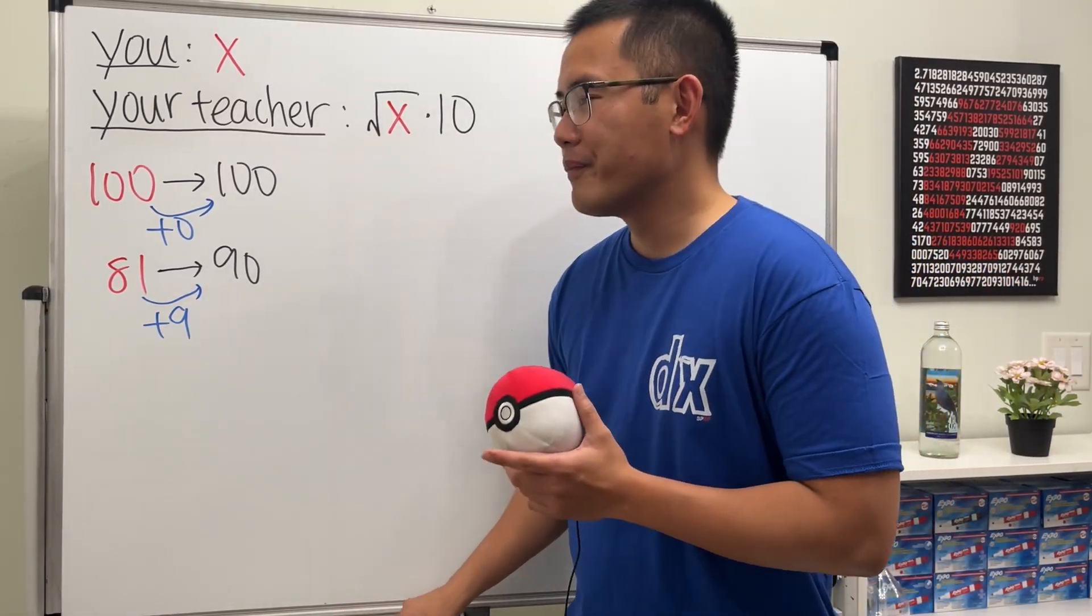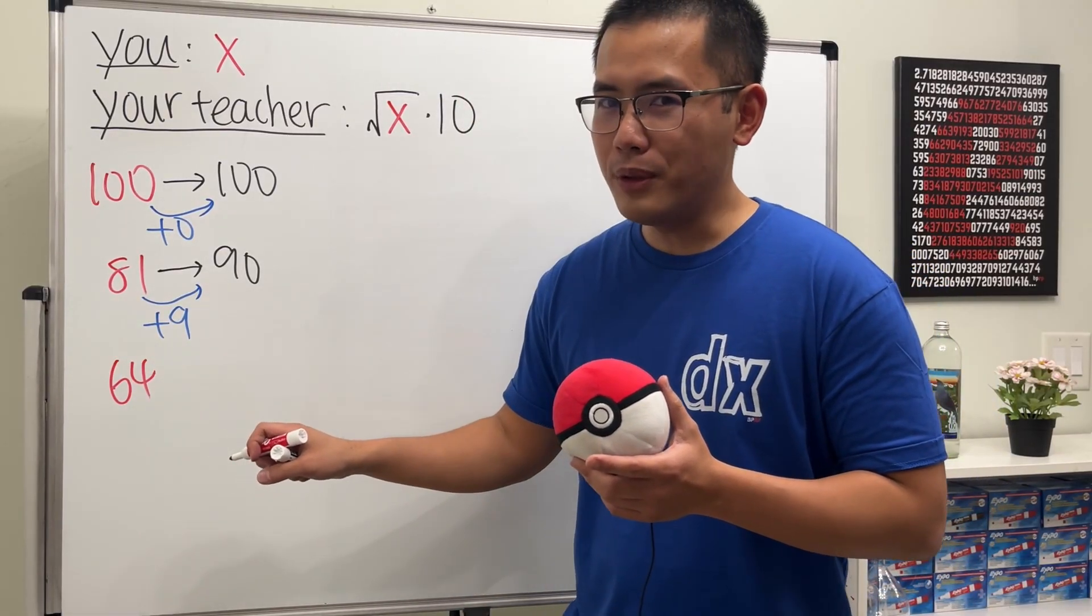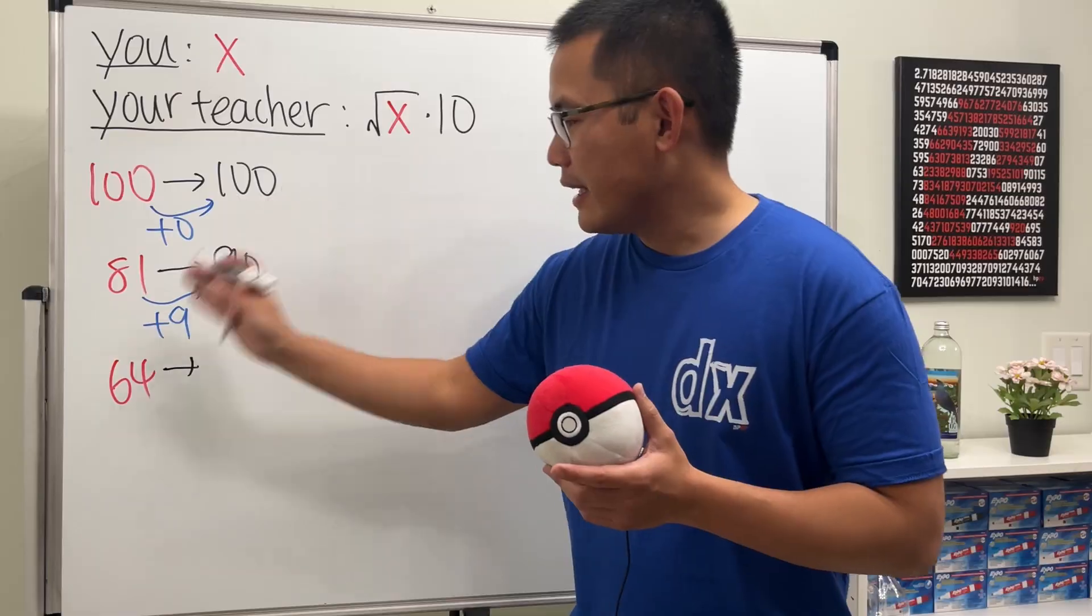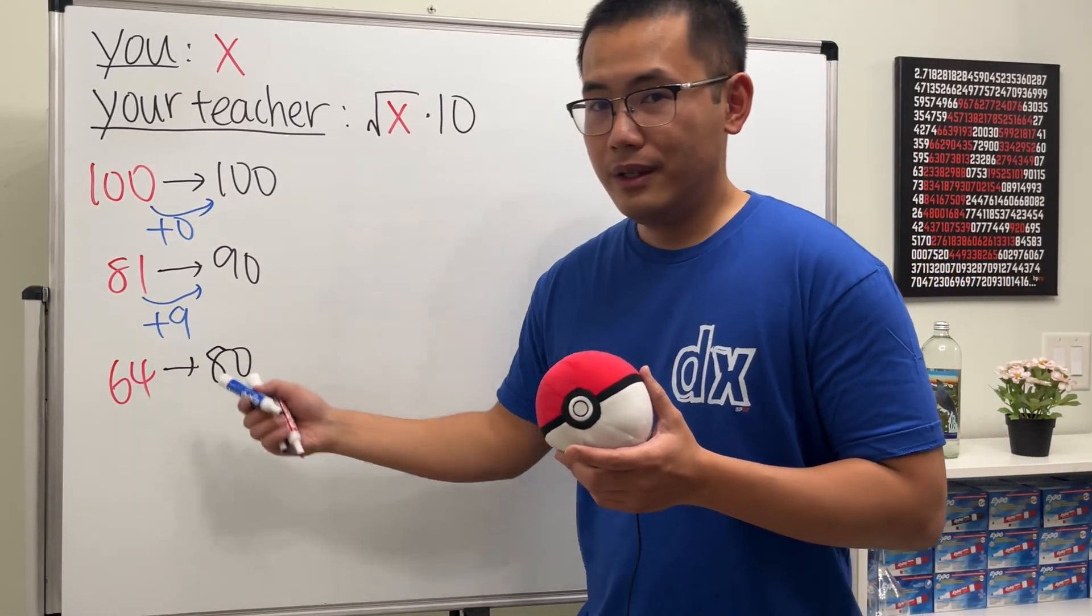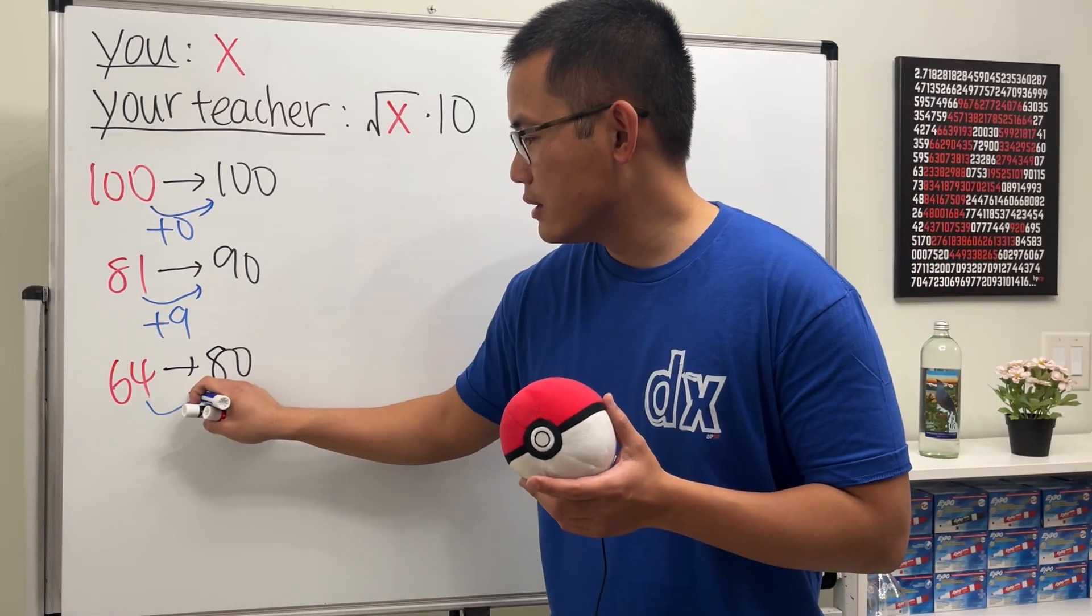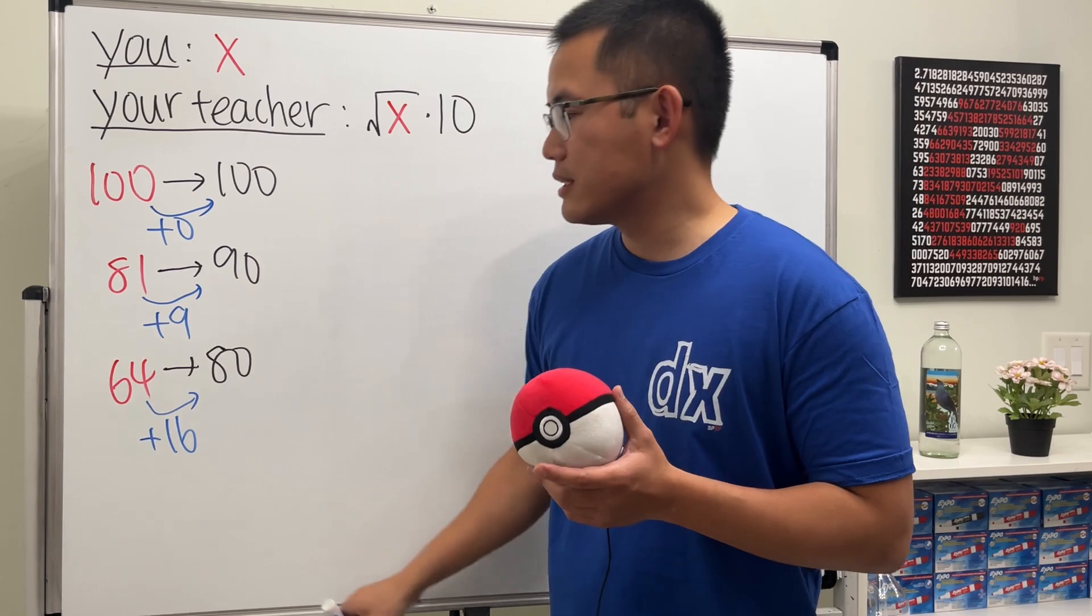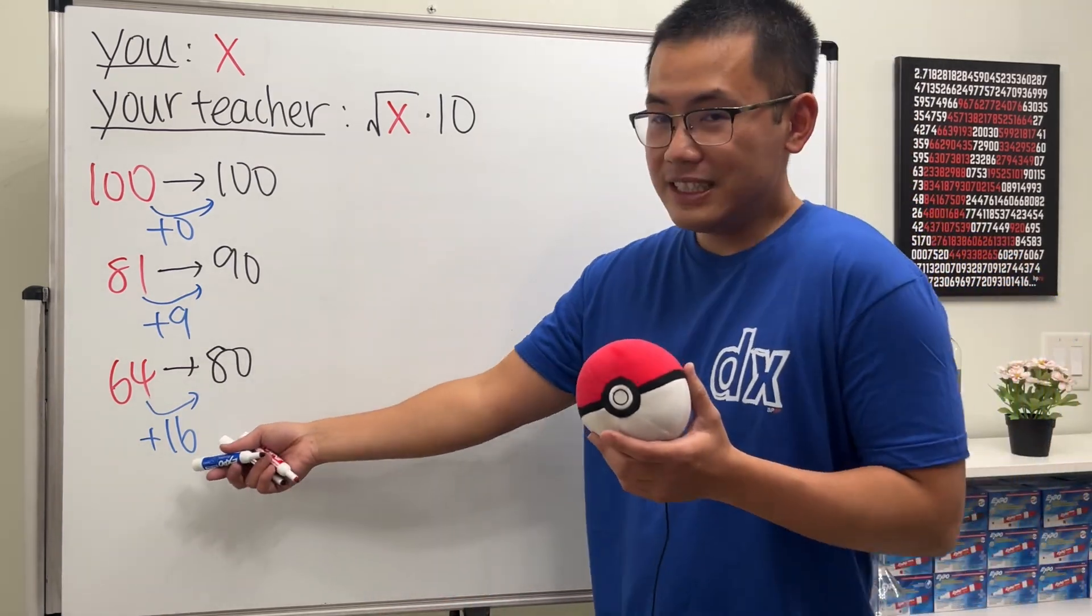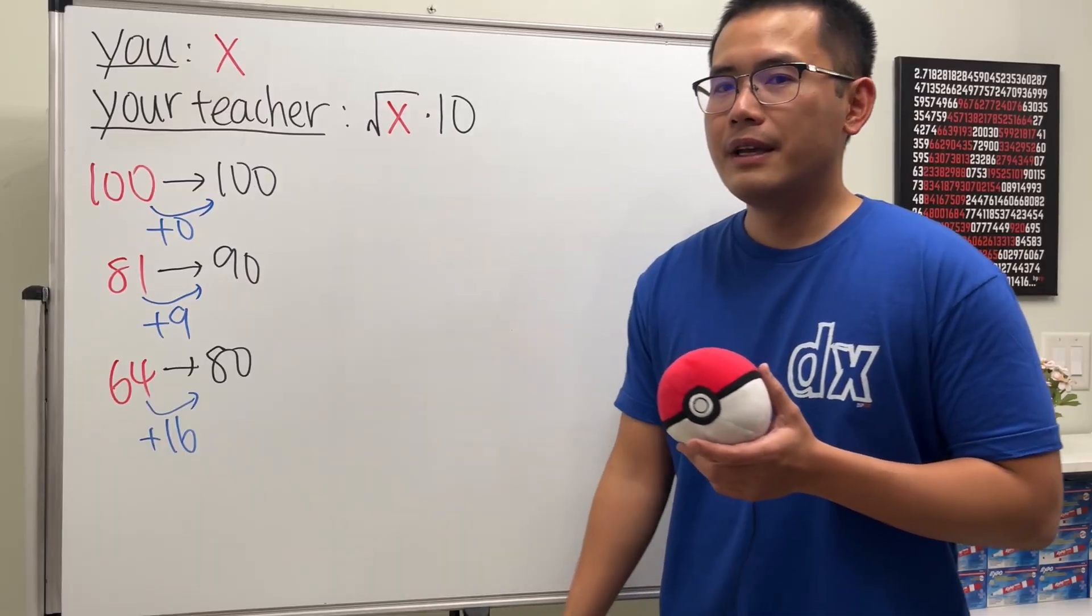And now, what if somebody scores 64 points? Well, take the square root of that and multiply by 10. We get 80. Have a look. This right here, how many points are we getting? We have gained 16 points. Wow. This is even better, right? Because, of course, plus 16 is better than plus 9.